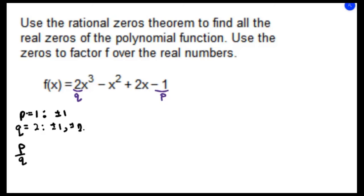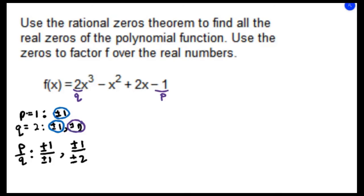The rational zeros have to be among the list of p over q. We come up with all the possible combinations: plus and minus 1 in the numerator over plus and minus 1 in the denominator, and plus and minus 1 over plus and minus 2. Reducing these, we get plus and minus 1 and plus and minus one half — so we have four potential rational zeros.